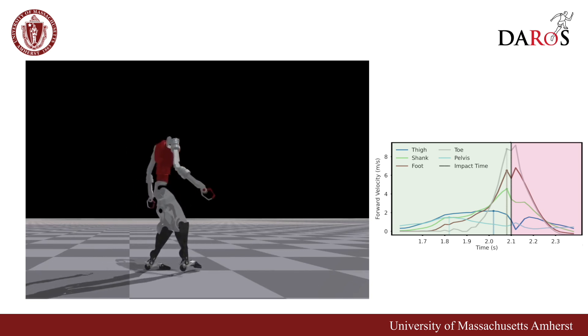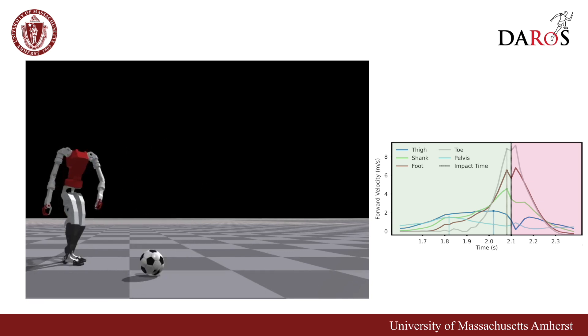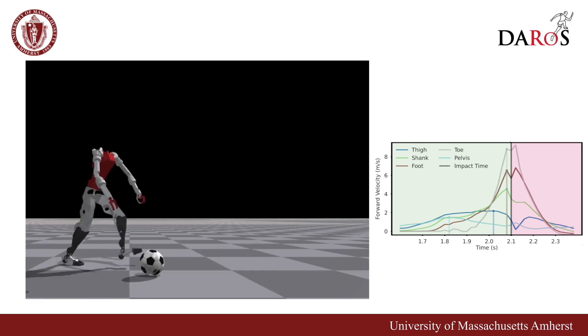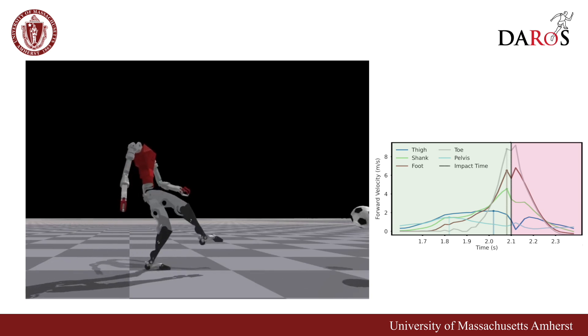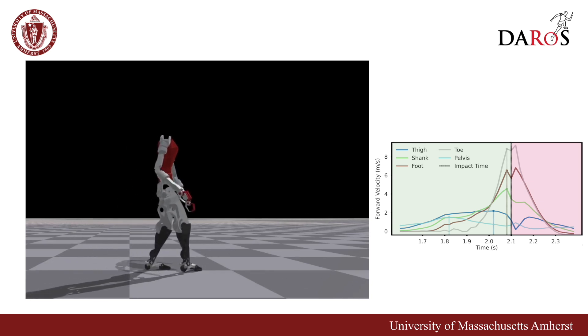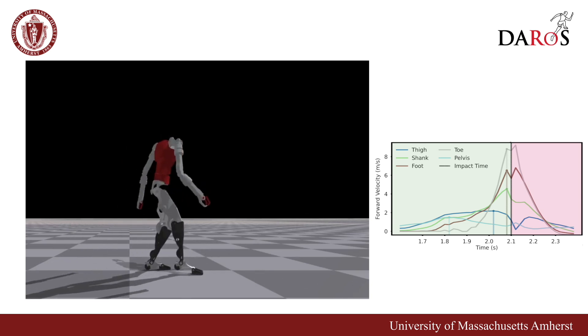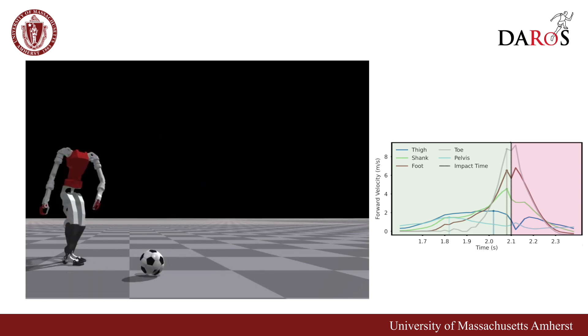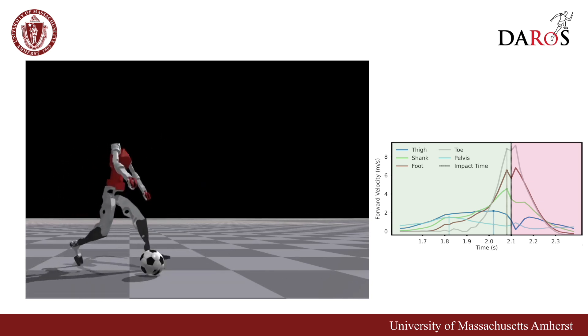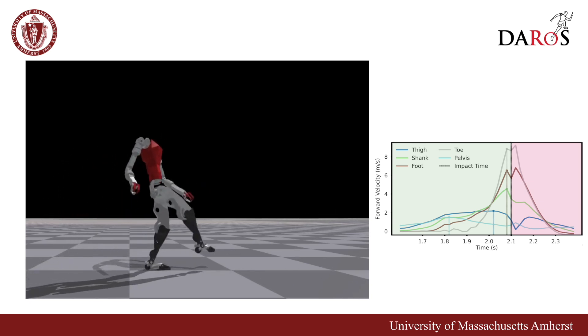It propels the ball at speeds over 40 kilometers per hour — about 40% of average human kicking speed — which is notable considering the robot's size and torque capability.